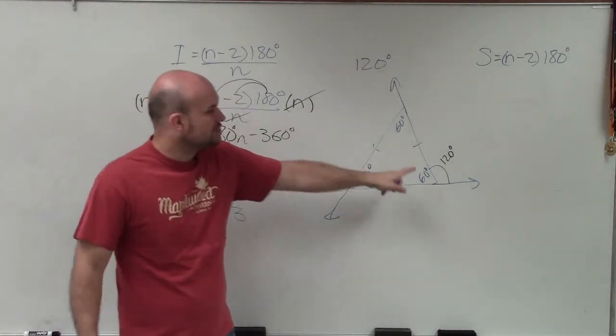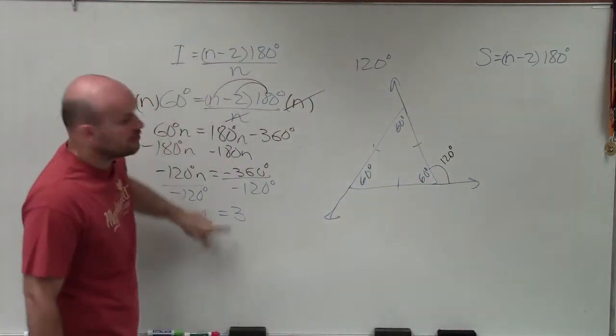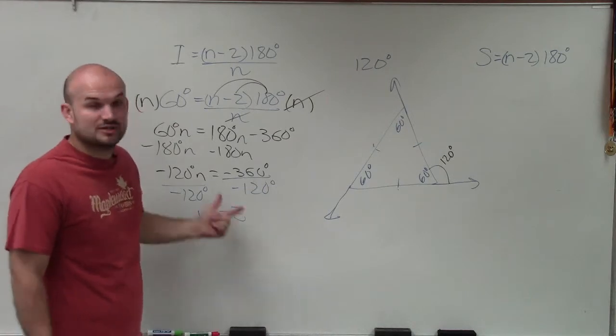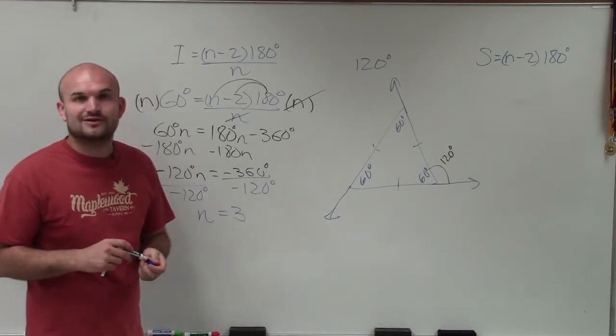So when given one exterior angle, determine the interior angle. Use this formula to determine the number of sides, which in this case is 3. So therefore, we have a triangle. Thanks.